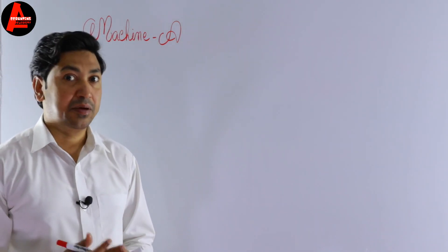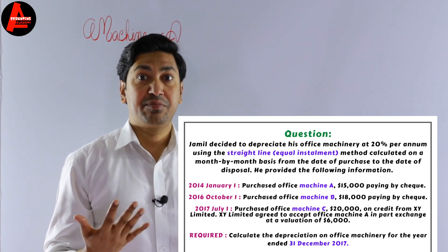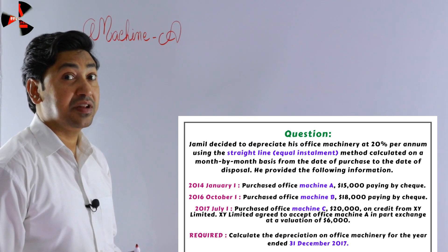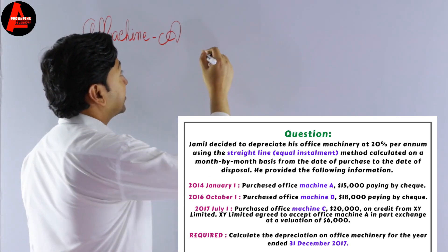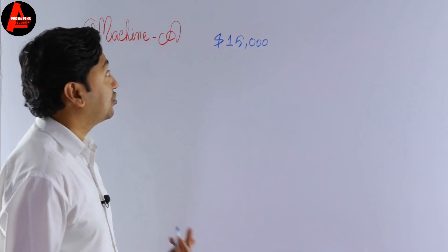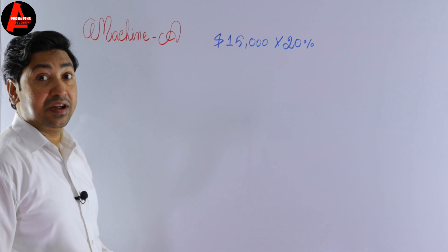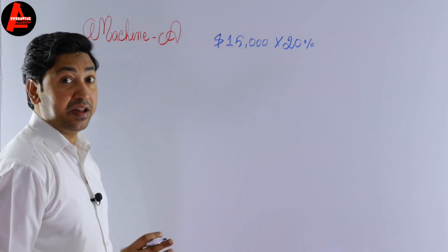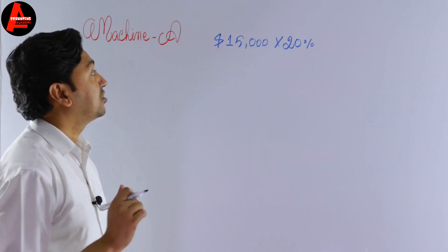Since Machine A was disposed of on 1st July 2017, we calculate depreciation from January to July — that is six months: July, August, September, October, November, and December are not included. The cost of Machine A is $15,000 and the depreciation rate is 20%. We multiply 20% by $15,000 to get the annual depreciation, then divide by 12 and multiply by 6 to get the six-month depreciation.